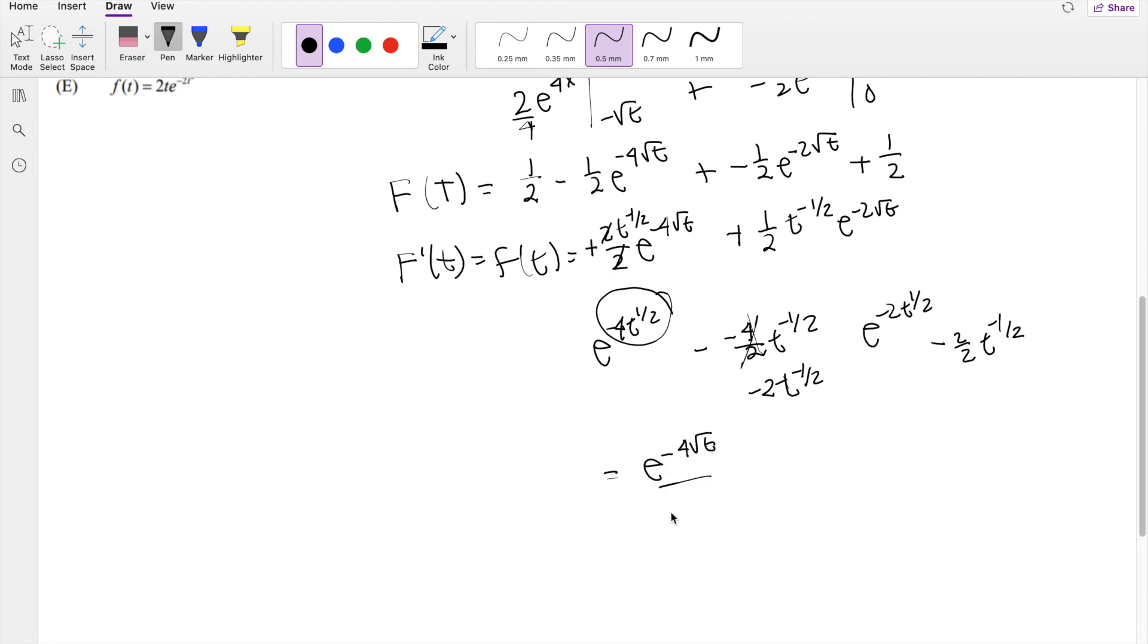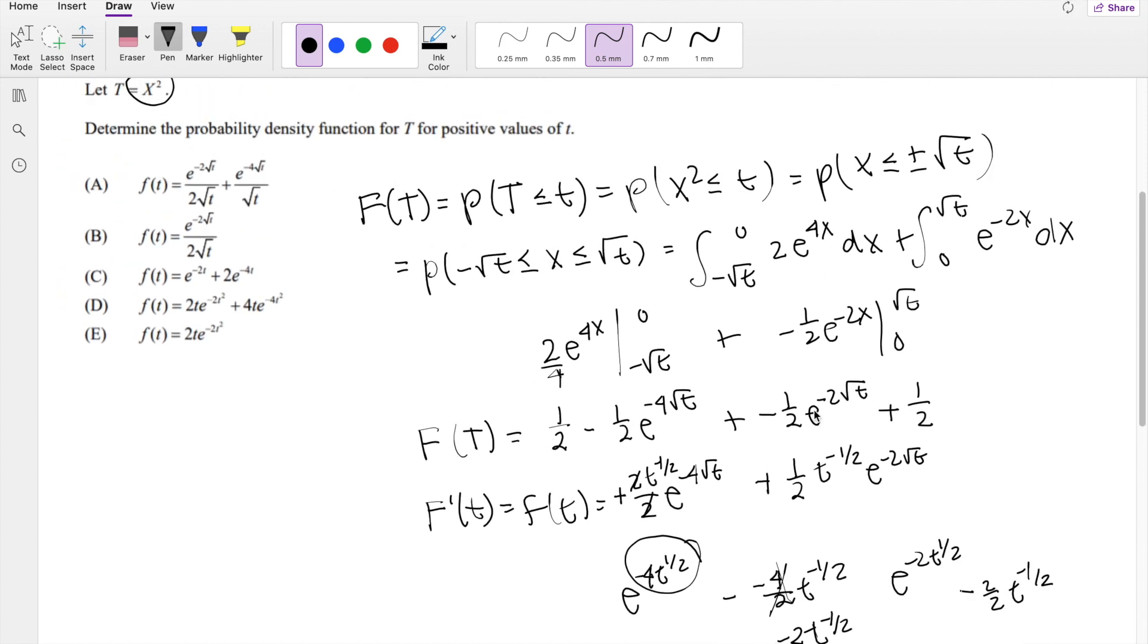So this becomes e to the negative 4 root t over t to the negative 1 half, so I can send that here, root t, plus 1 half, t to the 1 half here as well, e to the negative 2 root t, which is our answer, a.